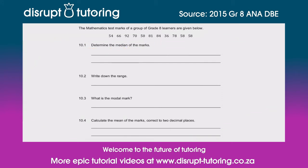The only way we can figure out the median is if we reorganize these numbers from lowest to biggest. The lowest mark is 36, so I'm going to write 36 and cross it out. The next biggest is 50 — cross that out. Then 54 — write it in and cross it out. Then 58, and there are two of them — cross those two out.